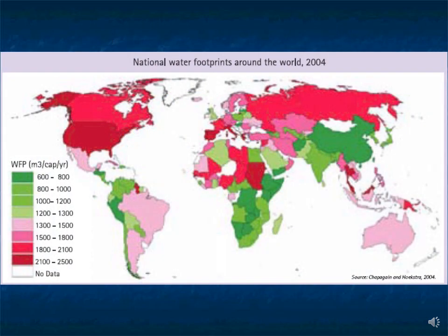Looking at water consumed per person per year: the United States uses between 2,100 and 2,500 cubic meters per year per person, making us one of the higher water users in the world. Contrast that with much of Africa, where use is between 600 and 1,000 cubic meters per year. Interestingly, even in equatorial Africa where water is plentiful, usage is low because they lack the infrastructure to deliver it — that is the economic scarcity we discussed. Water use per person in China and India is also much less than in North America.